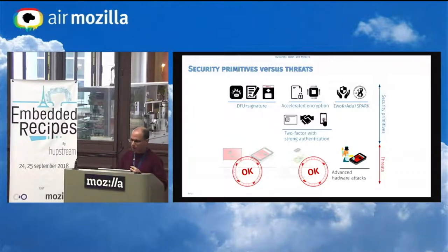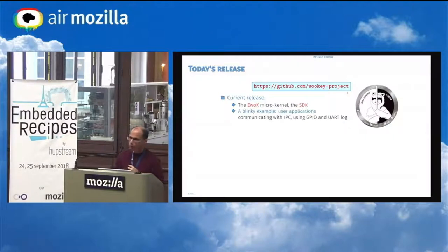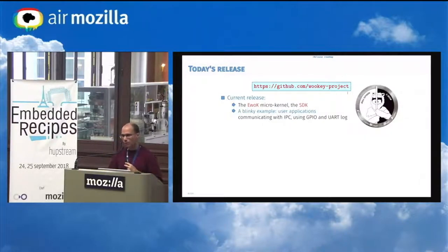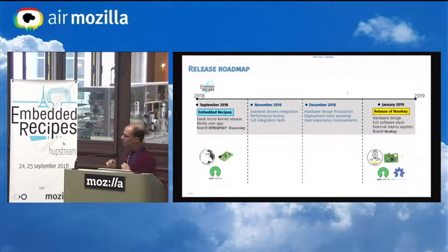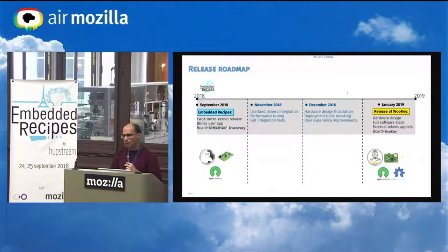Today's release is mainly the WooKey micro-kernel and the SDK, a blinky example with a user application handling IPCs, GPIOs, and UART log through the kernel, running on the STM32F407 Discovery board from STMicroelectronics, which you can get for 20 euros. The roadmap is to release in January 2019 the whole platform with the hardware schematics, all userland drivers, and the full software stack. We still need some adjustments and integration, so we cannot provide everything today, but it will come very soon.